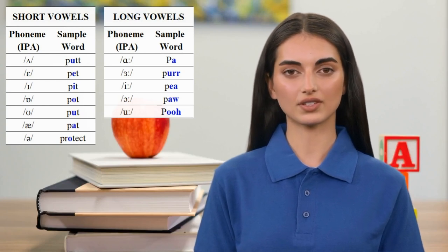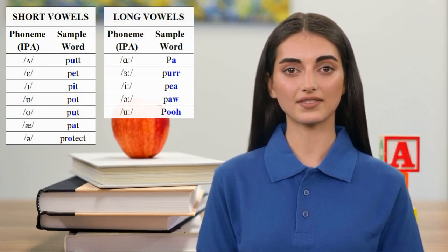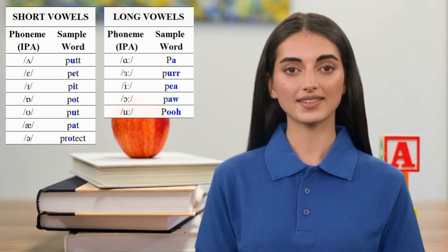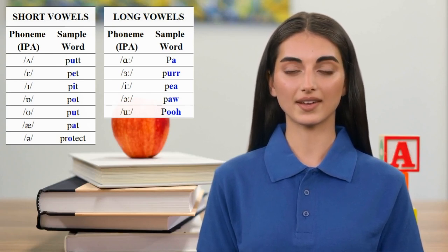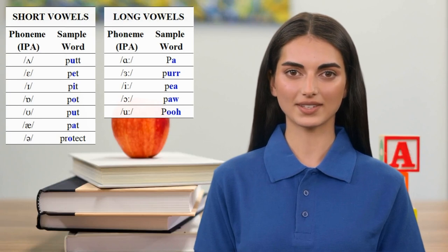The seven short vowels in RP are represented by the blue letters in the following words: put, pet, pit, pot, put, pat, protect.